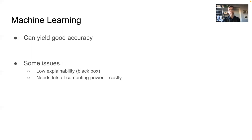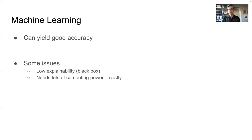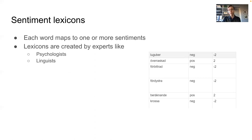There are some issues with machine learning models. A lot of the time they have a black box nature, which means that what happens between the input and output is pretty much unknown to the user. There is often low explainability, and they need a lot of computing power — if we're talking about the GPT-3 OpenAI type neural network, it takes a lot of time and resources to train.